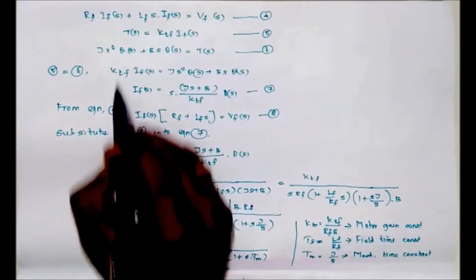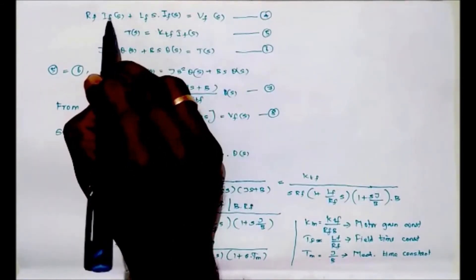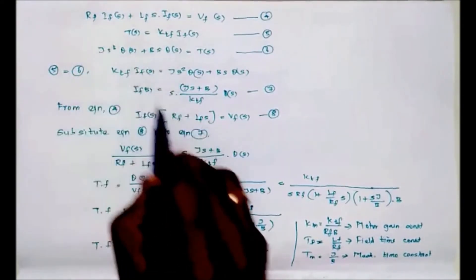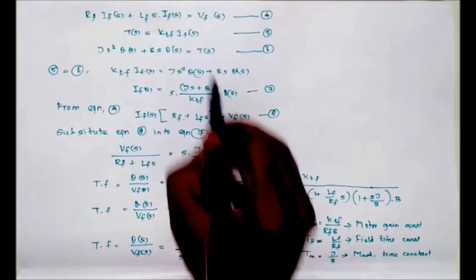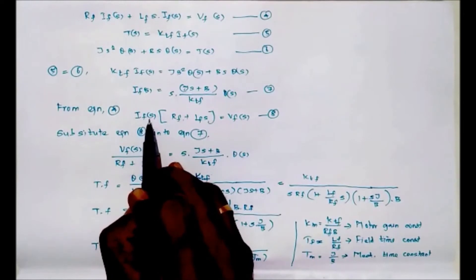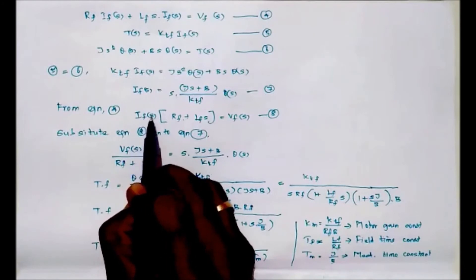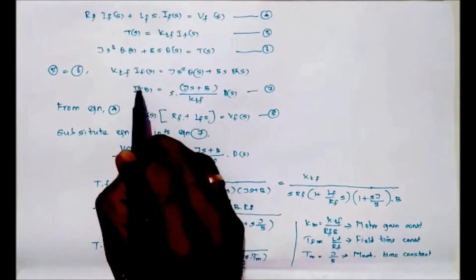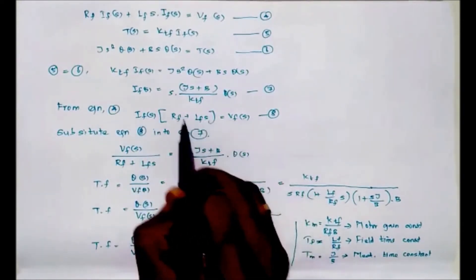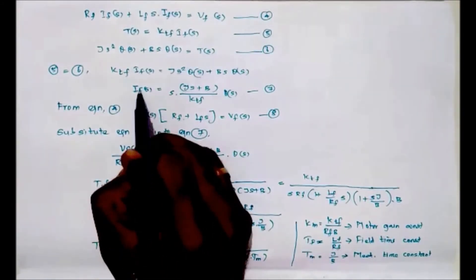From equation number four, taking If(S) common from the two terms: If(S)·(Rf + Lf·S) = Vf(S). We now substitute this If(S) into equation number seven. From this equation we can find If(S): If(S) = Vf(S) / (Rf + Lf·S). We substitute this term into the right hand side.